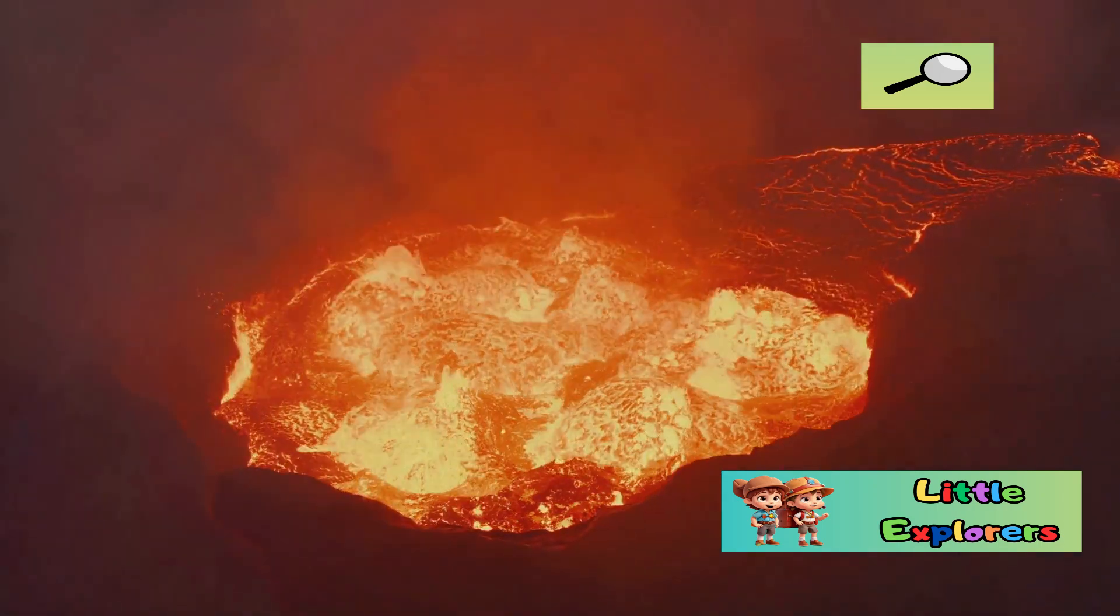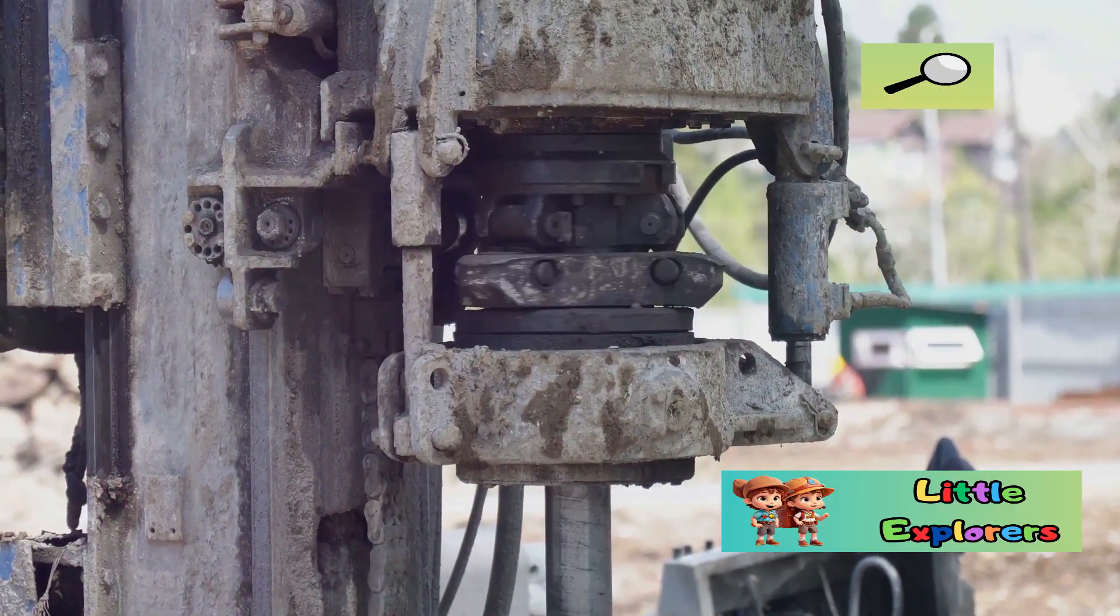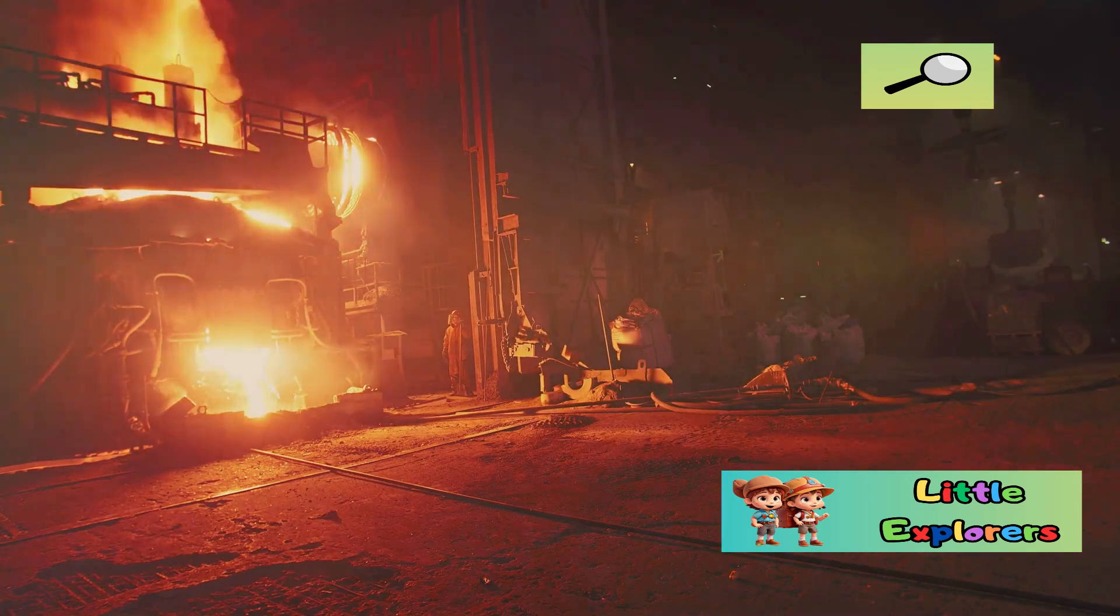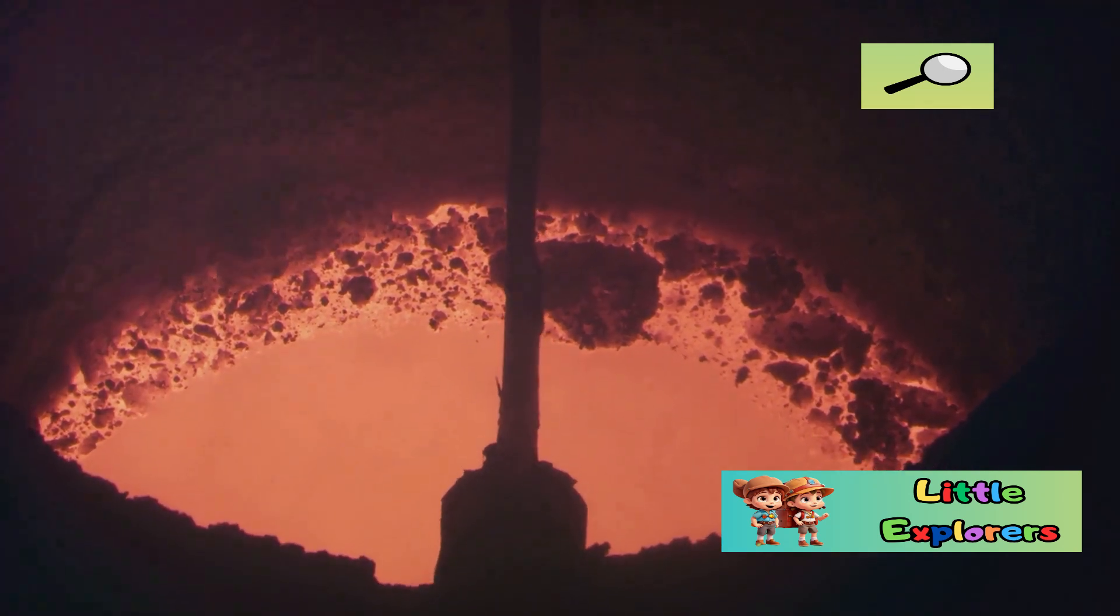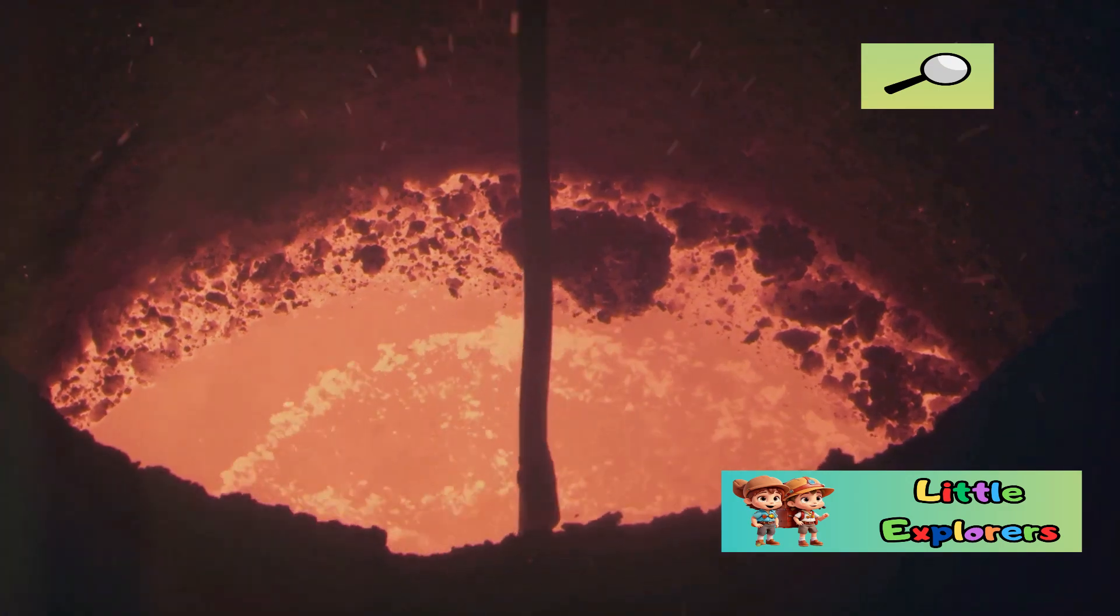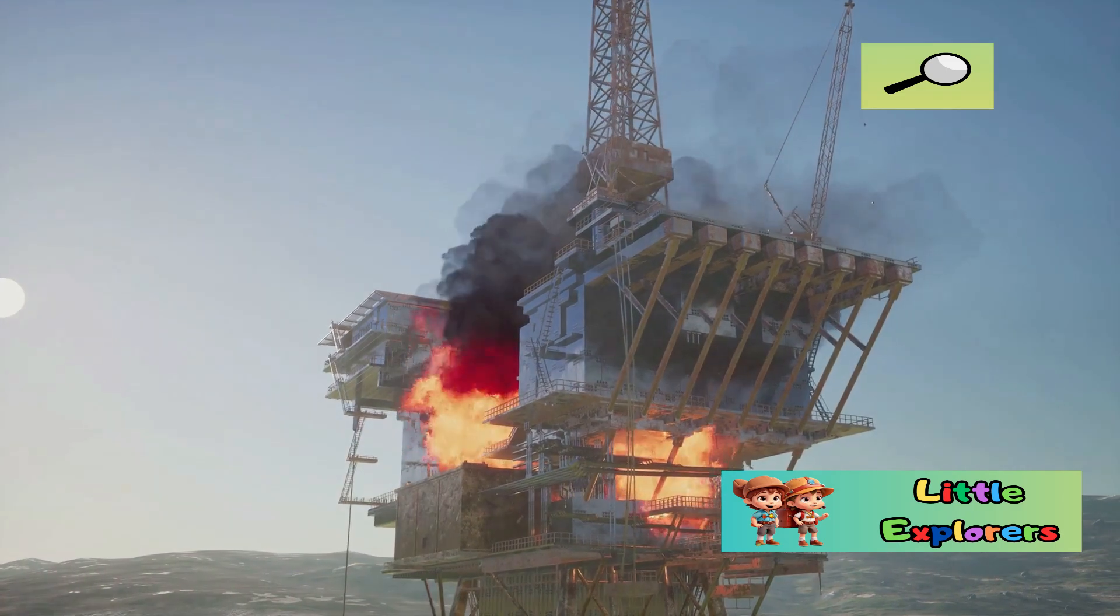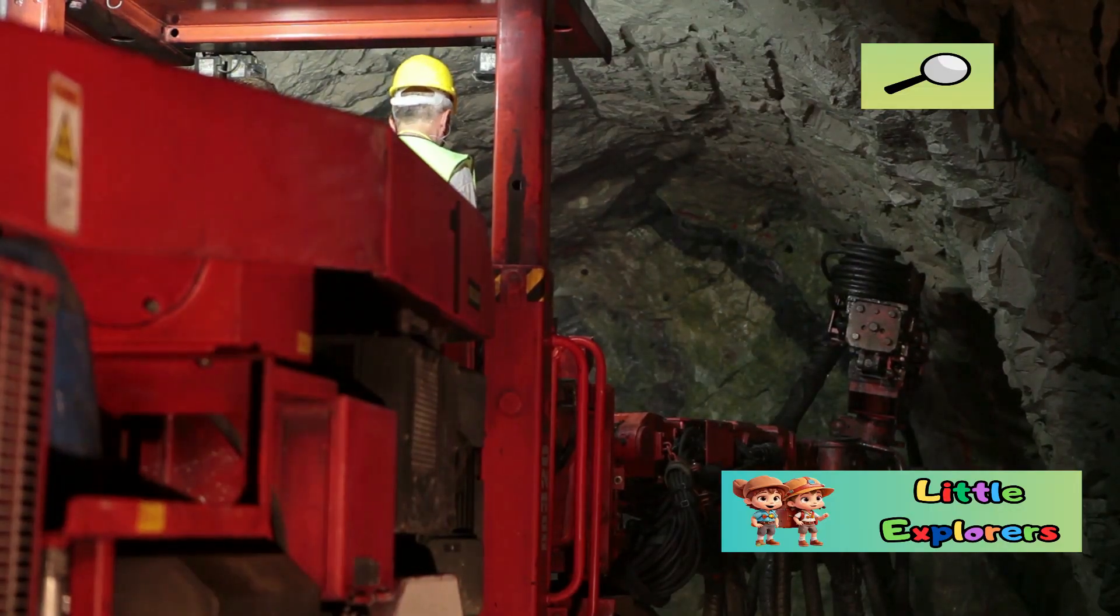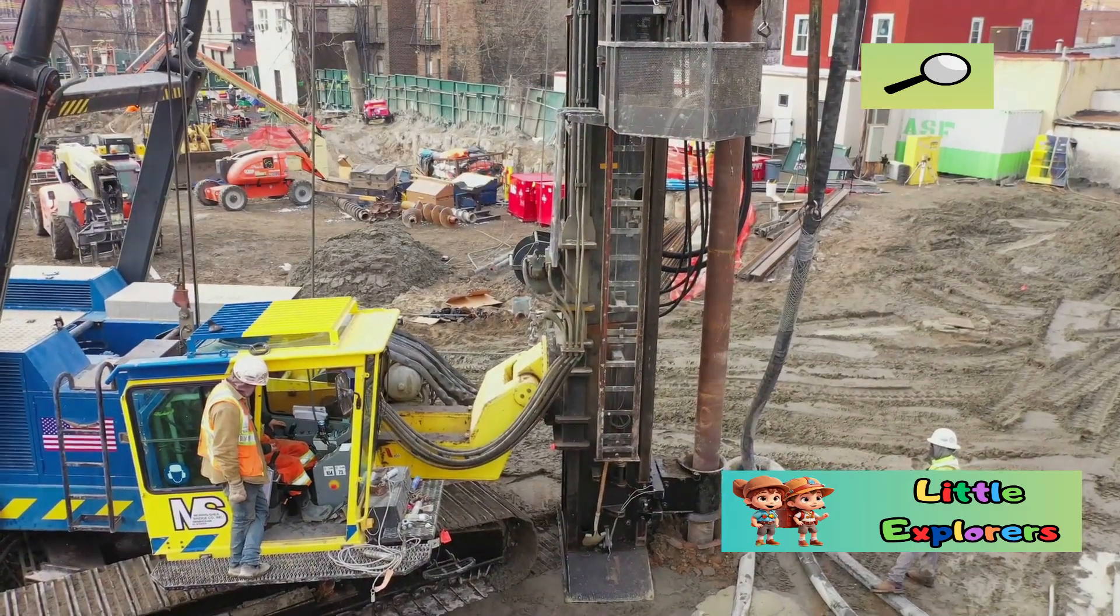Deep drilling is not without its challenges. One of the biggest hurdles is the extreme heat found deep underground. The temperature increases with depth, reaching over 180 degrees Celsius (356 degrees Fahrenheit) at the bottom of the Kola Super Deep Borehole. This intense heat can damage drilling equipment and make operations difficult. Engineers had to develop special drills and fluids to withstand these extreme conditions. Overcoming the heat barrier was crucial for reaching greater depths.